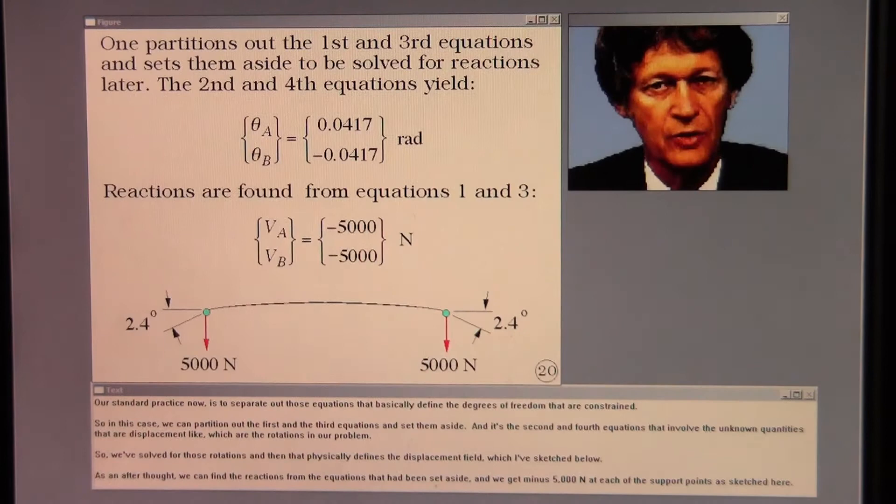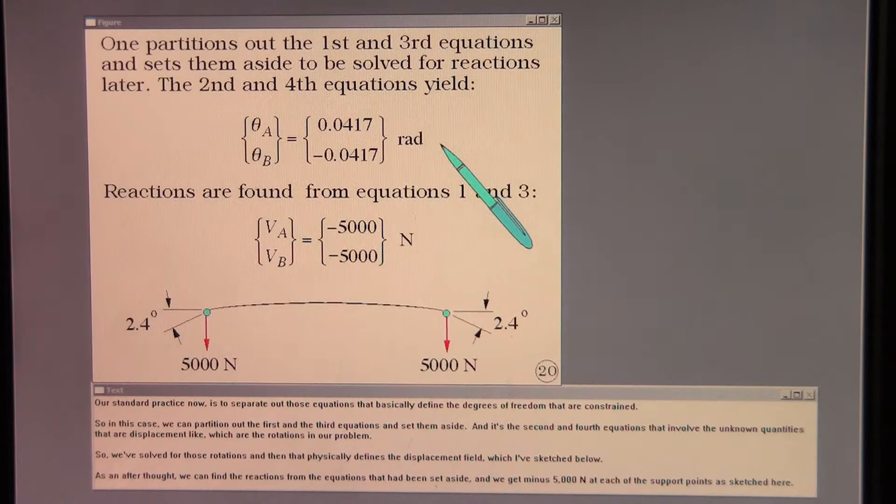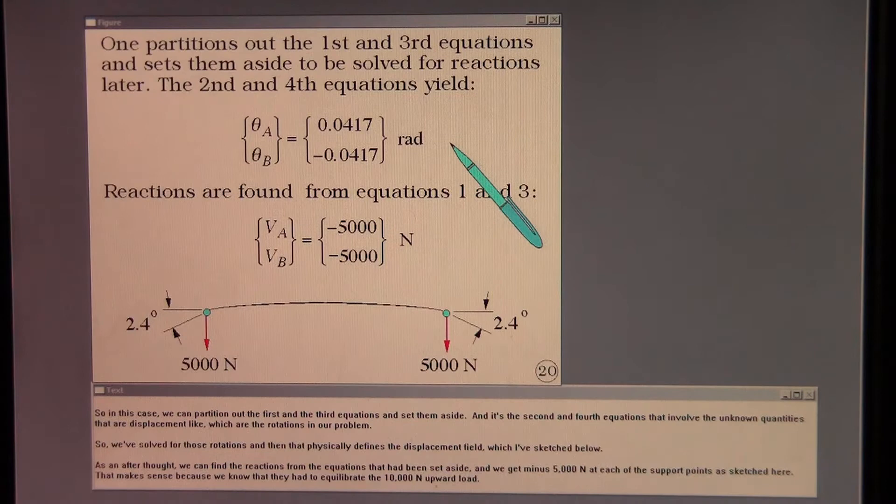Our standard practice now is to separate out those equations that basically define the degrees of freedom that are constrained. In this case, we can partition out the first and the third equations and set them aside.